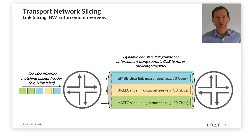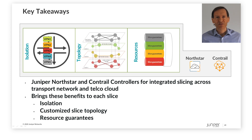Let's have a look at how bandwidth enforcement works in the transport network, such that one slice cannot steal bandwidth needed by another slice. Each router along the path determines which slice a packet belongs to — for example, by looking at the VPN label. Then each slice is policed on each link in order to ensure that it conforms to the agreed bandwidth level. In summary, we have seen how we can create slices right across the transport and telco cloud domains using Juniper's NorthStar and Contrail controllers. Each slice benefits from isolation, a customized slice topology, and resource guarantees.